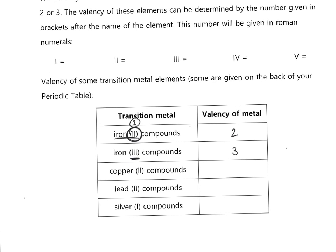You need to be familiar with Roman numerals: one dash is I (one), two dashes is II (two), three lines is III (three), IV is four (because V is five and the dash before it means one less), and V is five. So copper(II) means copper has a valency of two; lead(II) means a valency of two; silver(I) means a valency of one.